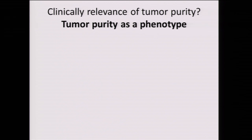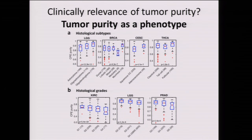The first question we asked was whether tumor purity has clinical relevance. We used all the clinical data available in TCGA and looked for correlations with tumor purity. The result is that there is not much. What we did find is correlation with histological subtypes and histological grades. For example, in lower-grade glioma, there are major differences between astrocytoma and oligodendroglioma, but those are essentially different cancer types — similar to what we saw in the earlier plot.